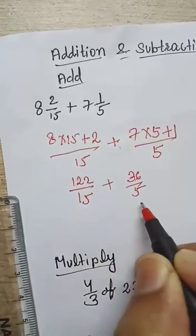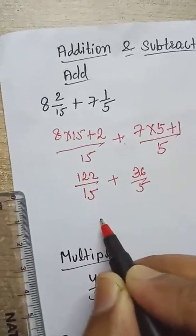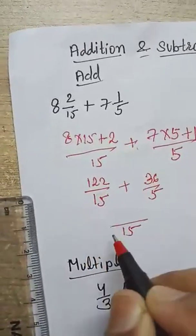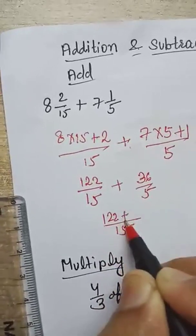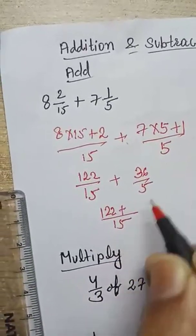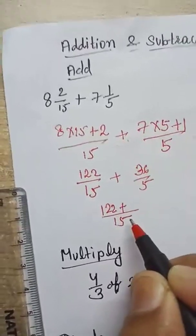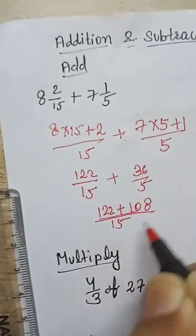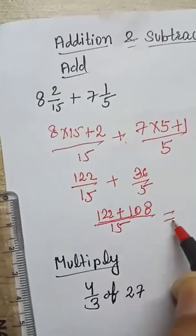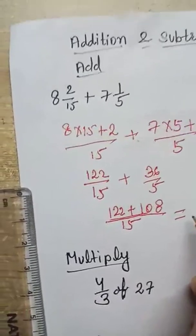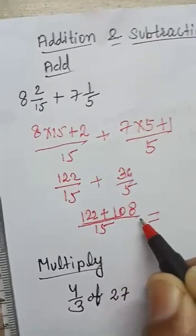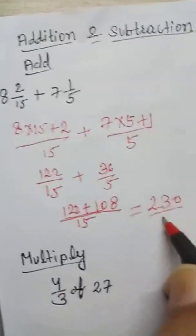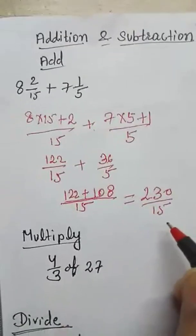LCM of 15 and 5 is 15. So 15 ones are 15, giving 122 upon 15; and 5 threes are 15, so 36 threes are 108 upon 15. Then 122 plus 108 gives 230 upon 15.